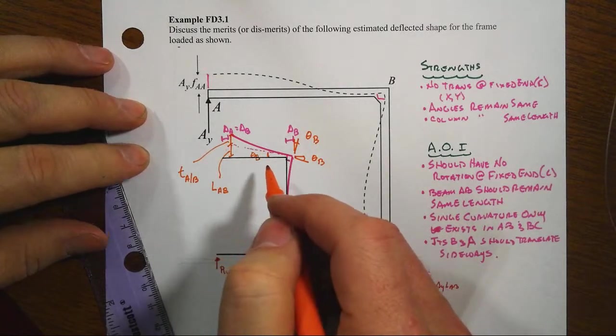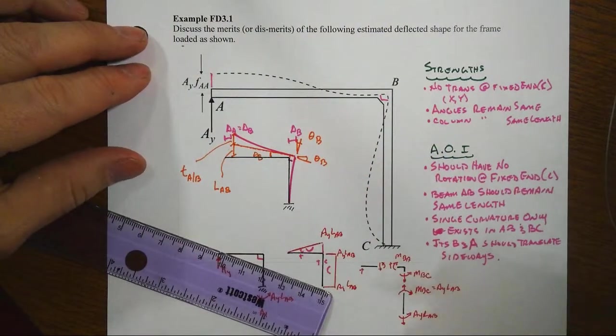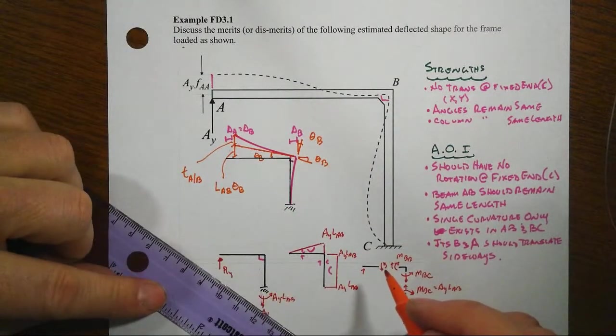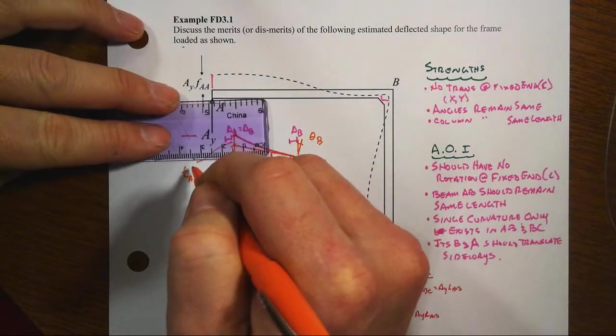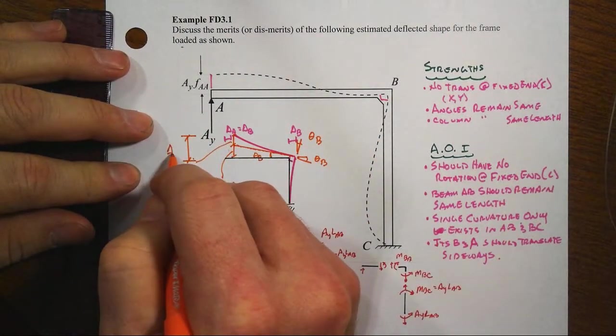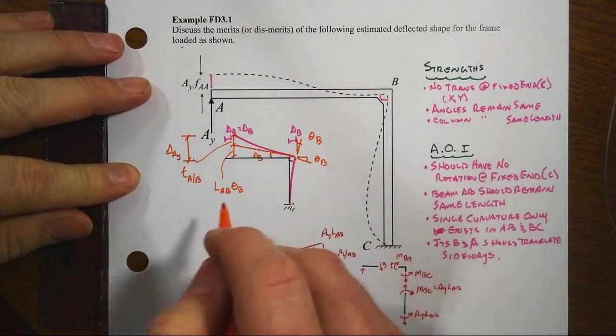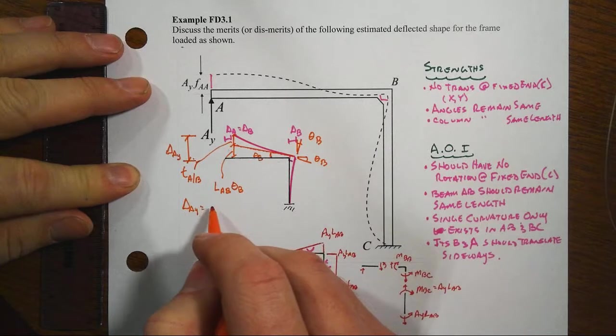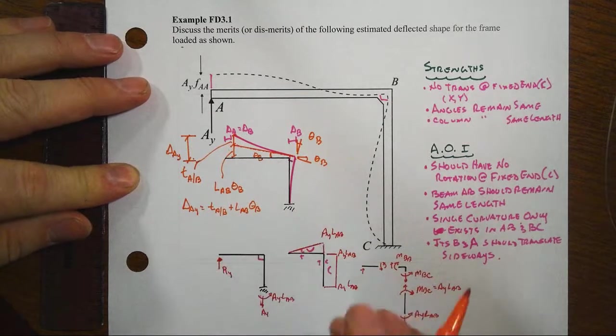That portion is then just going to be LAB times the tangent of theta B. But remember, that's such a small angle that we're going to use the small angle approximation. So that's the same thing as LAB times theta B. And that means that this displacement, this vertical displacement that happens out here at A, delta A, or V sub A, delta A sub Y, is going to be equal to the sum of these two. That being tA with respect to B plus LAB theta B.